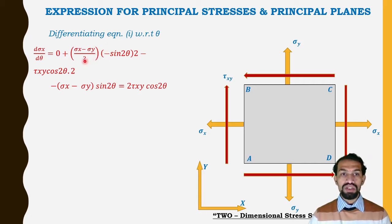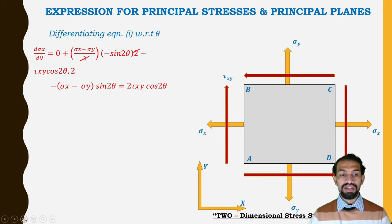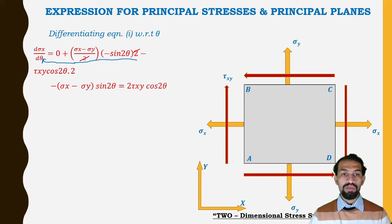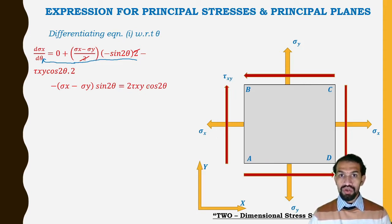The factors of 2 cancel on both terms. Rearranging, we bring the (σx − σy)·sin2θ term to one side, giving: −(σx − σy)·sin2θ = 2τxy·cos2θ.